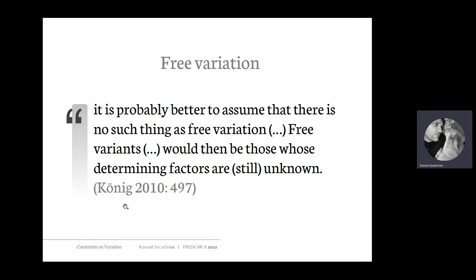What Koenig is saying is that there are forces, real mechanisms that make variation not so free — mechanisms that make the frequency of one variant different from another — but we simply don't know what those mechanisms are. At some point in the future, we'll know, and what appears to be free variation will not be so free after all. These two authors are essentially saying that free variation is only an illusion resulting from our ignorance of the determining factors.